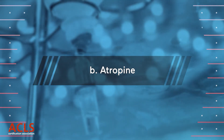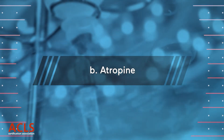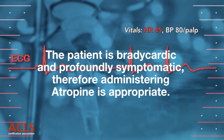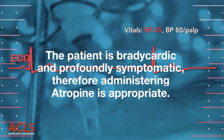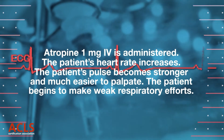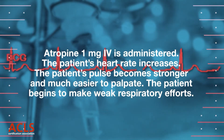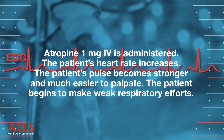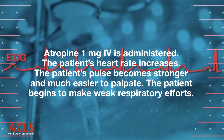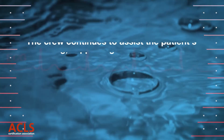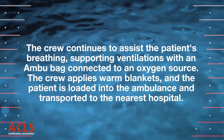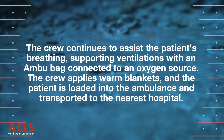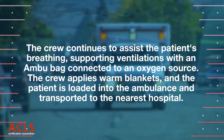Administer atropine. The patient is bradycardic and profoundly symptomatic; therefore, administering atropine is appropriate. Atropine is administered. The patient's heart rate increases and the pulse becomes stronger and much easier to palpate. The patient begins to make weak respiratory efforts. The crew continues to assist the patient's breathing, supporting ventilations with an ambu bag connected to an oxygen source. The crew applies warm blankets and the patient is loaded into the ambulance and transported to the nearest hospital.